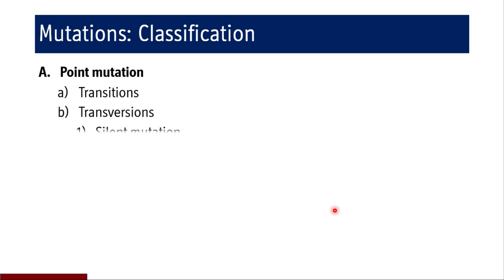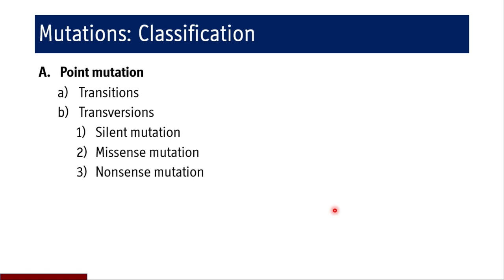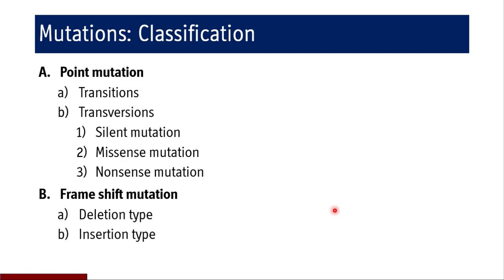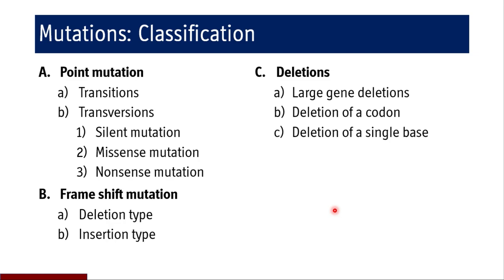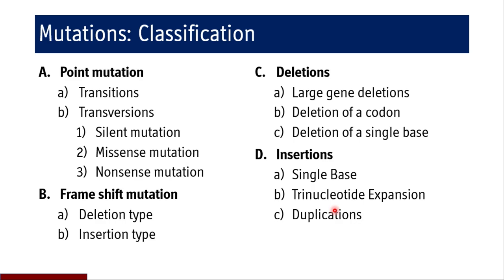Point mutations may be a transition or a transversion. Under transversion we have silent mutation, missense mutation, and nonsense mutation. Under the frameshift category we have deletion type and insertion type. Under deletions we may have large gene deletions, deletion of a single codon, or deletion of a single base. Under insertions we may see single base insertion, trinucleotide expansions as in Huntington's chorea, and duplications of genetic sequences.